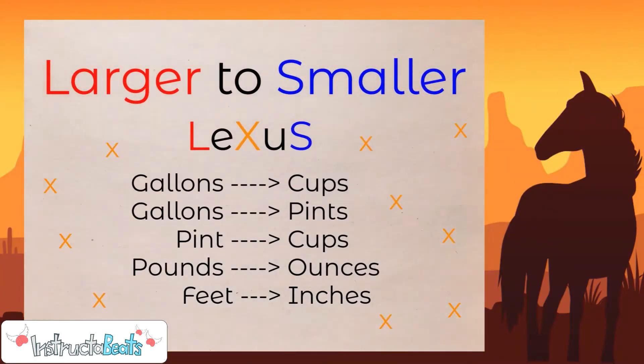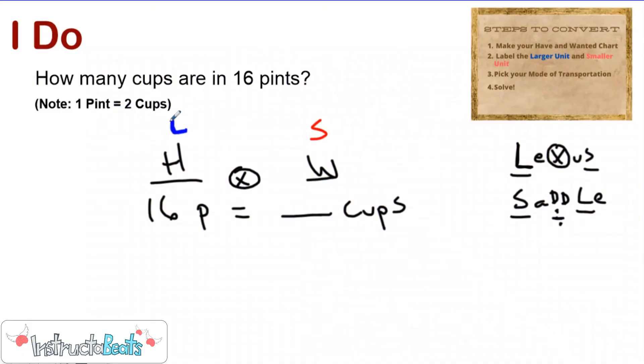Larger to smaller means the Lexus comes out. So one pint equals two cups, so I'm going to be doing 16 times two, which would be 32. So I can see that 16 pints would actually be equivalent to 32 cups. So the Lexus and saddle really are just a way to remember what operation you're doing. If you're going larger to smaller, you're multiplying. If you're going smaller to larger, you're taking your saddle, and you're going to be dividing because the D right there is in the middle of the small and large. Whereas the X for the Lexus is in the middle of the large and the small. Just a fun shortcut to remember what operation we're going to be doing to help us solve these conversion problems.